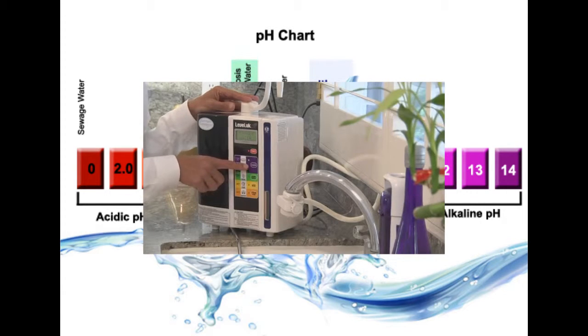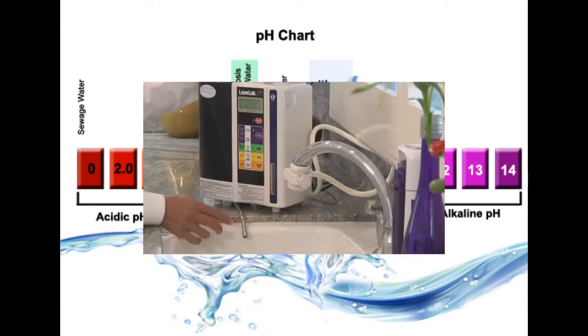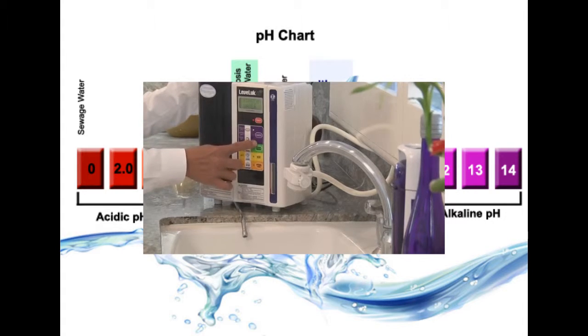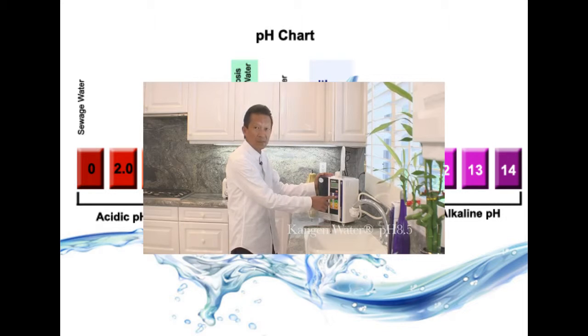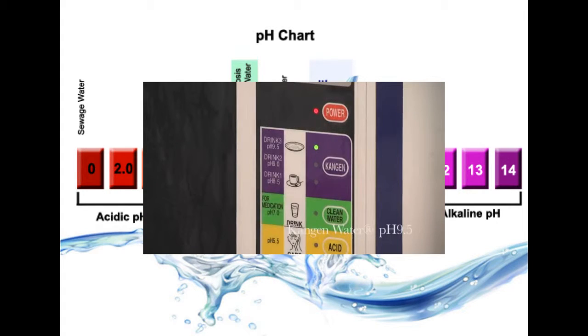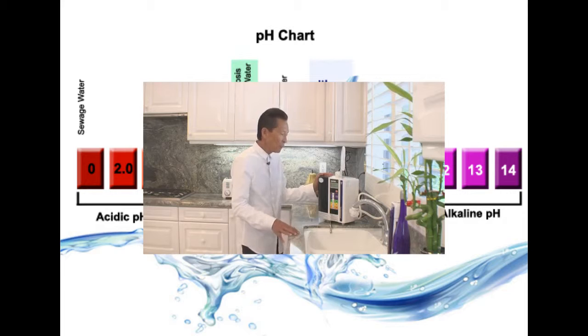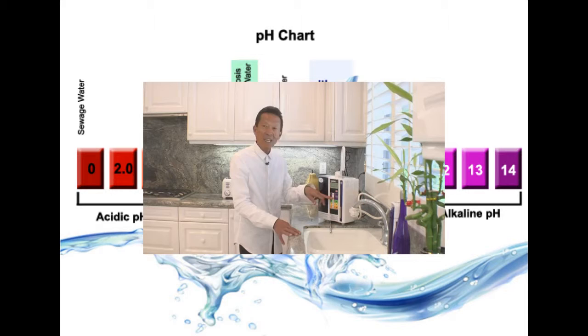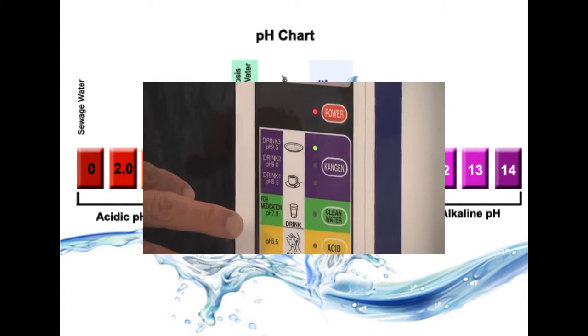Now as you can see here the unit makes different types of waters. The first one is the drinking water, the alkaline water. It makes three types of alkaline water: 8.5, 9.0 and 9.5. Now we suggest that if you are getting the water you begin with the 8.5, and then a week later you go to the 9.0 and then eventually you'll land up at 9.5 or 9.0.